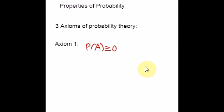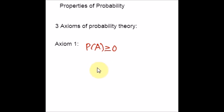Axiom number 1 says that the probability of an event — here I have taken event A, but it can be any event — is a real number greater than or equal to 0. This is one of the important axioms. Now let us move to axiom number 2.